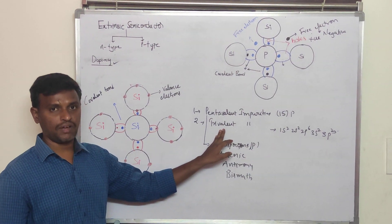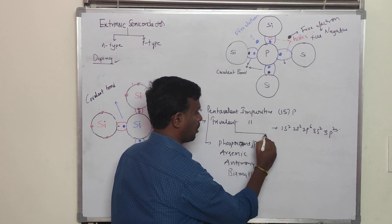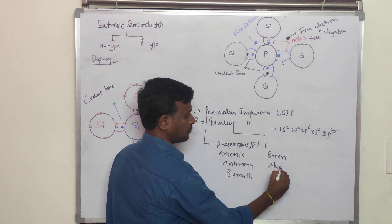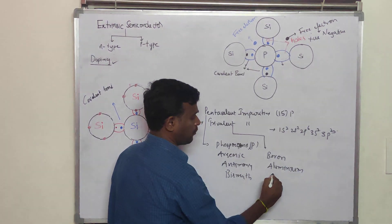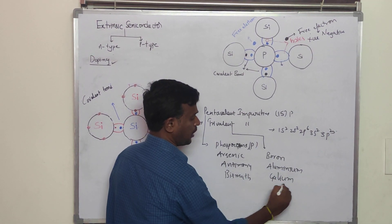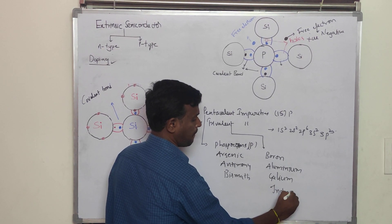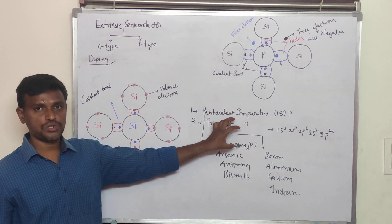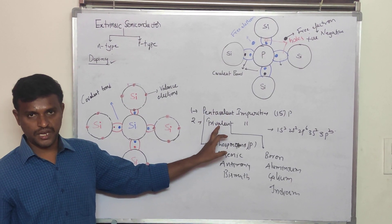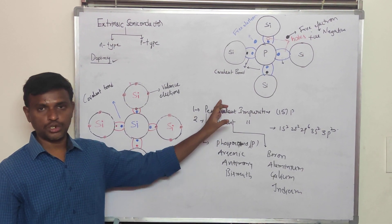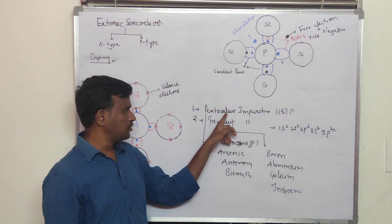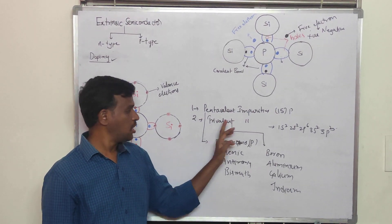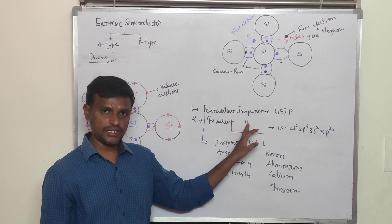Similarly, we have the trivalent atoms, that is the third group elements: boron, aluminium, gallium, and indium. These are called trivalent atoms because they consist of three valency electrons. These are mainly used to form N-type and P-type semiconductors by using the doping process.